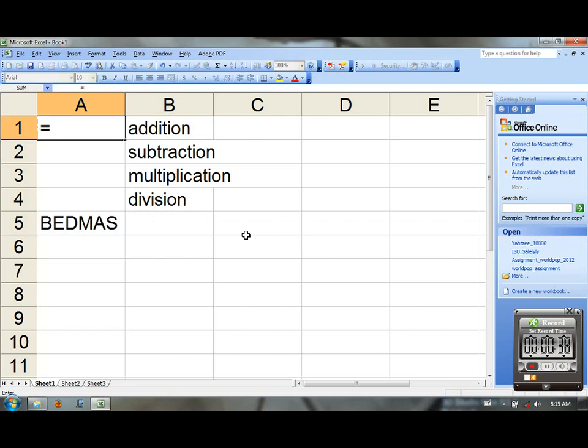For addition, we open up an equal sign on an empty cell, and we add two numbers together. I'll add 34 to 56, so I get 90.